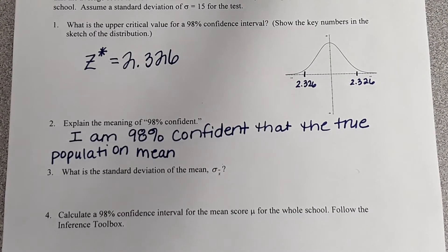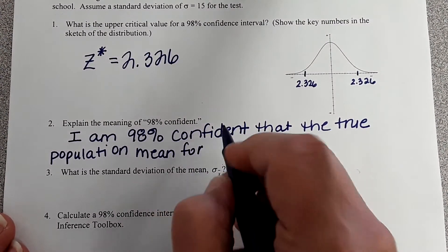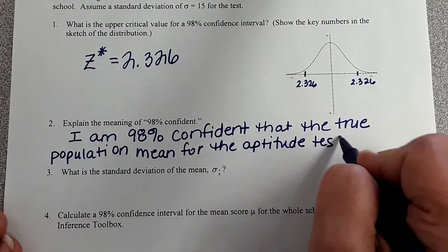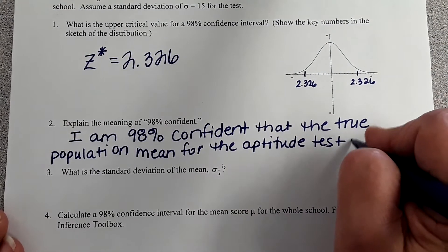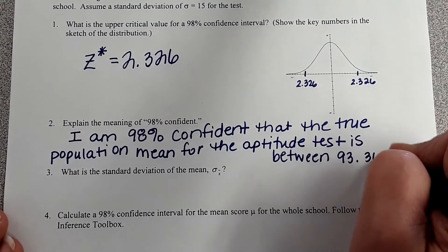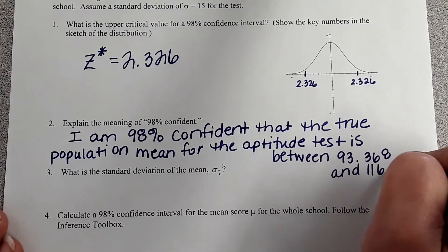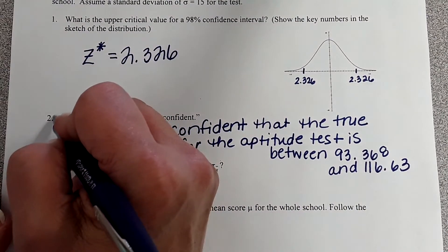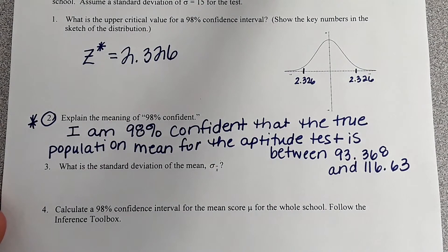About 50% of the AP test comes from what we're going to do in the next 9 to 12 weeks. The population mean for the aptitude test is between [the interval values] — we'll rewrite this one again because there's another meaning for it.